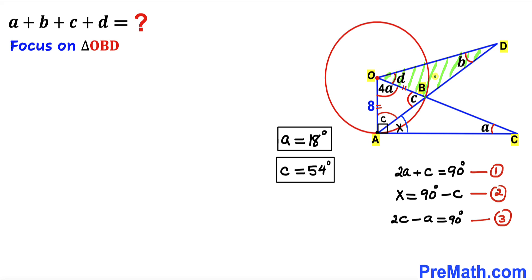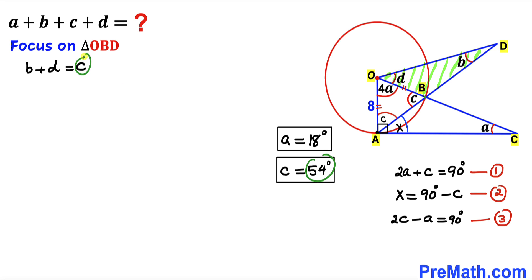Now let's focus on triangle OBD. We can see that angle C is the exterior angle of this triangle, equal to the sum of the two opposite interior angles B plus D. So B plus D equals angle C. Since angle C is 54 degrees, substituting gives us B plus D equals 54 degrees.